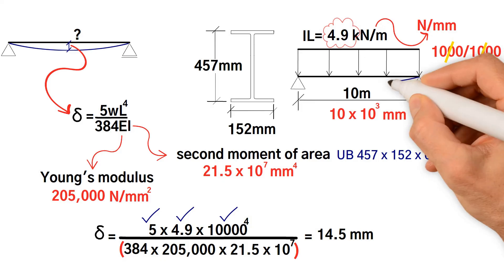In conclusion, the steel beam will deflect at midpoint 14.5 millimeters and should be less than span by 360 which is 10 times 10 to 3 by 360 which is equal to 27 millimeters. Then that is acceptable.